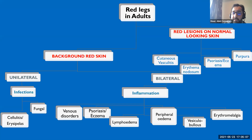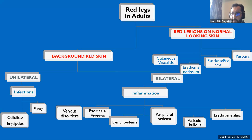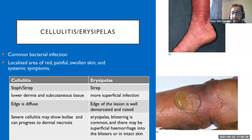If bilateral, think about inflammatory causes — the most common being venous disorders. Psoriasis and eczema can appear in both categories. Also consider lymphedema, peripheral edema, vesiculobullous diseases such as pemphigoid and pemphigus, and rarely erythromelalgia.